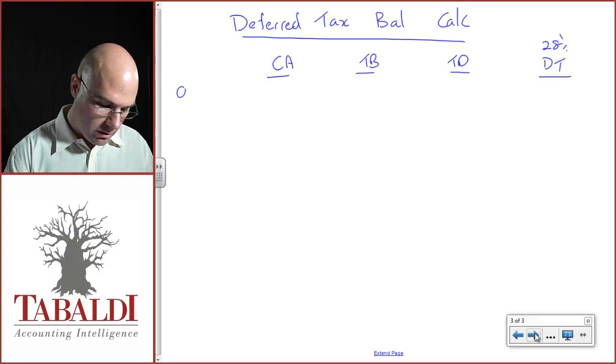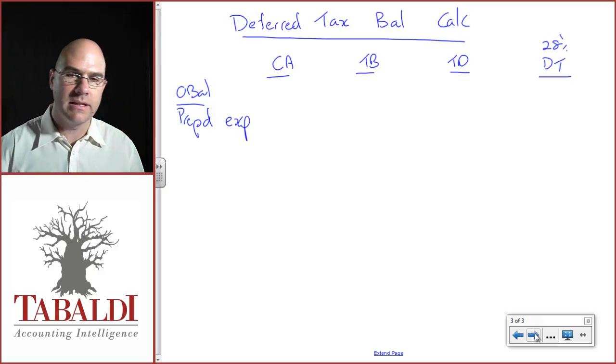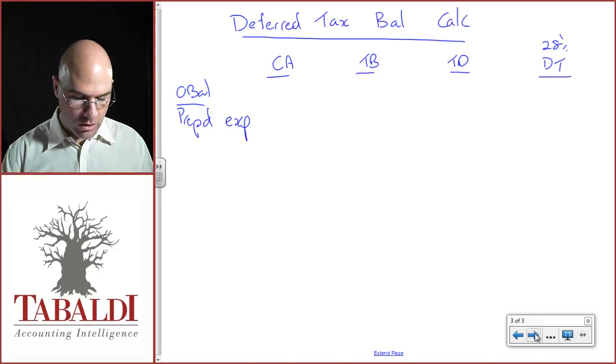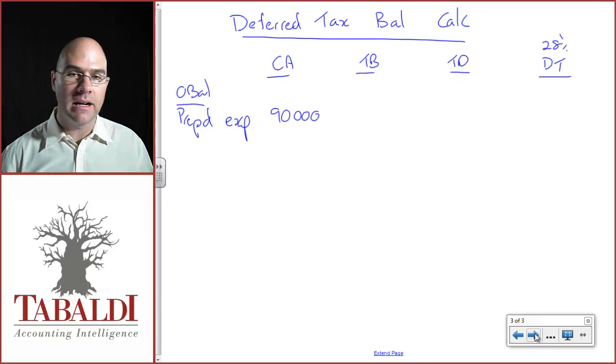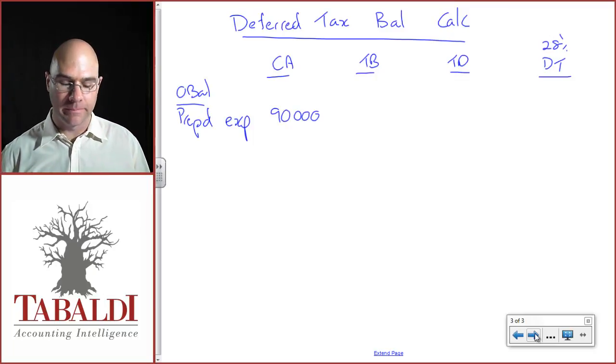So let's do our opening balance calc first. We're going to call that a prepaid expense, excuse me, abbreviating here, we're running out of space. So the opening balance last year, therefore this year's opening balance, was 90,000 as a future economic benefit.